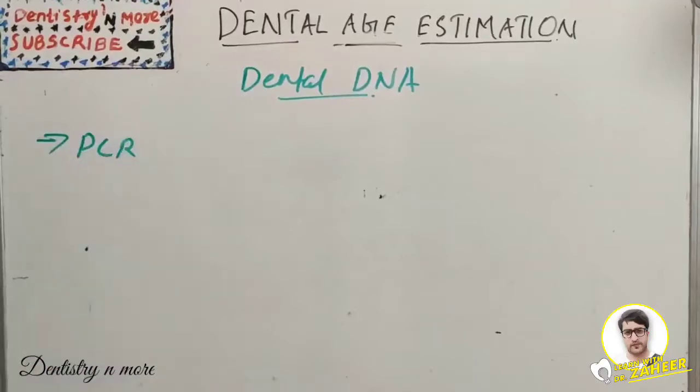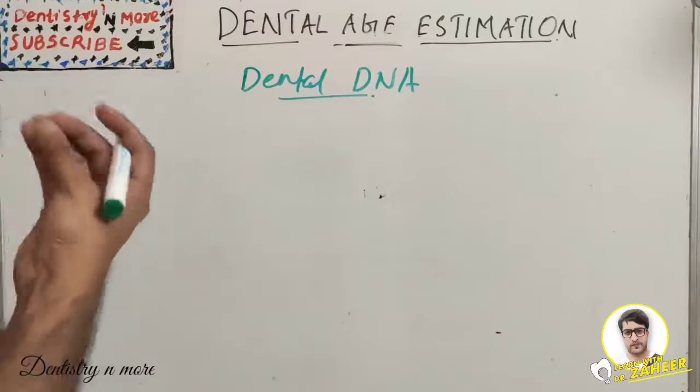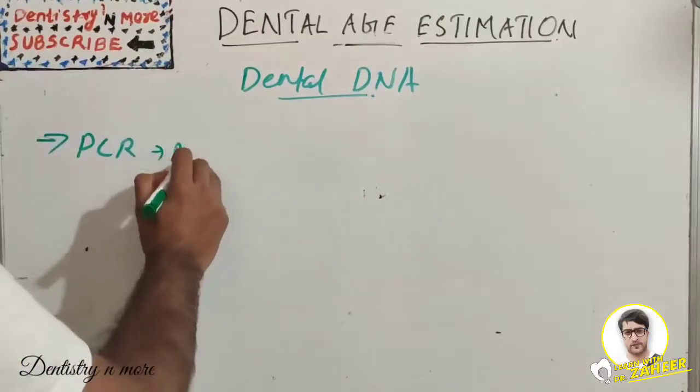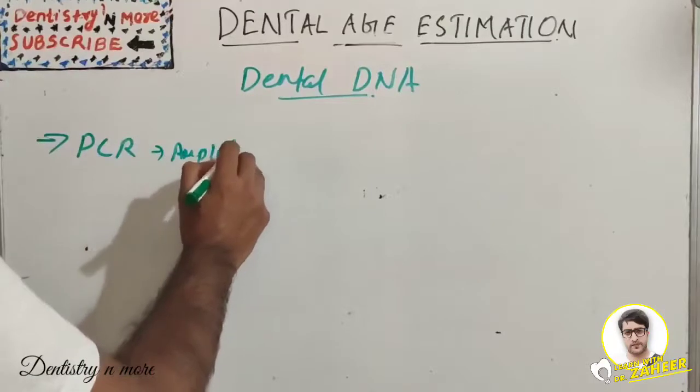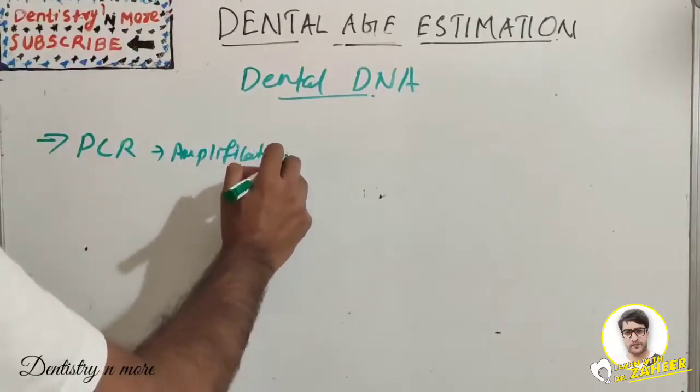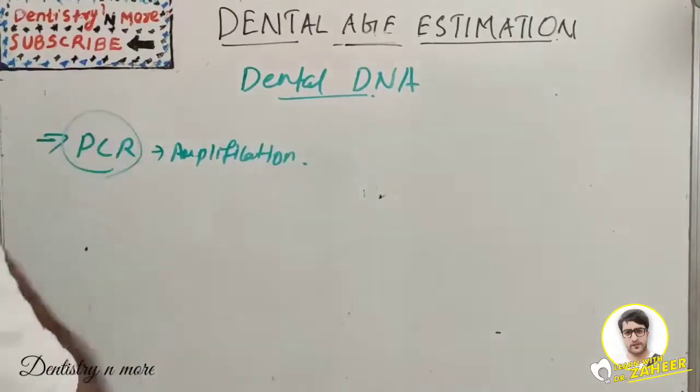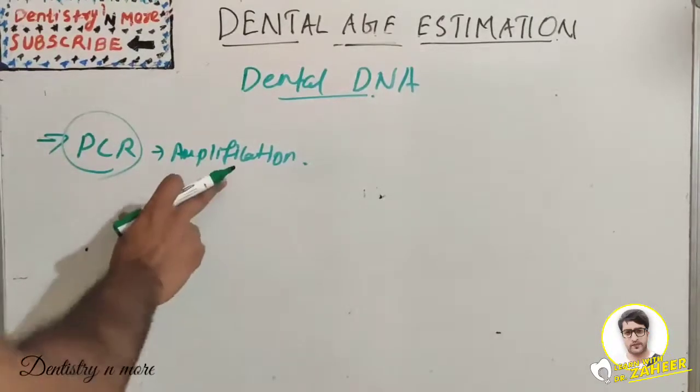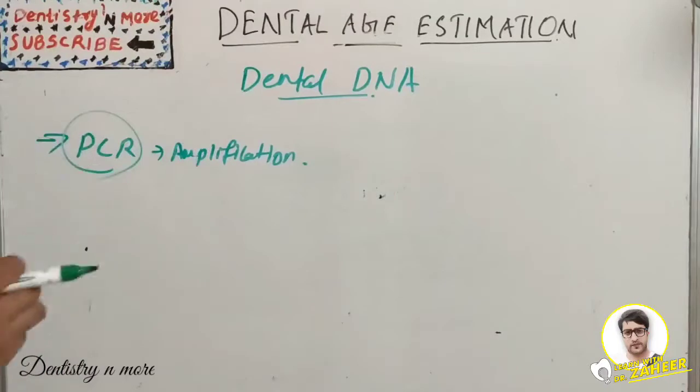Once we get the DNA, we conduct a PCR method, that is polymerase chain reaction, which allows amplification of highly degraded DNA. Once we get the teeth and extract DNA, we can do PCR and amplification of this highly degraded DNA.